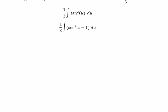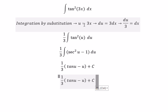And you get 1 over 3, multiplied by tan u minus u plus C. For u, we need to change back to 3x.